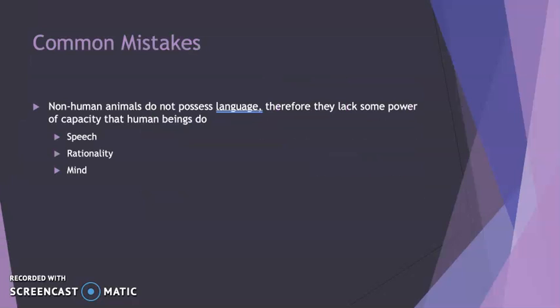Some common mistakes within philosophy, and also within the world at large and particularly within theological discussions, is to draw sharp lines between the human being and the non-human animal world — oftentimes to even ignore that human beings are animals, that we have bodies, that we are vulnerable, that we are subject to disease, that we are dependent upon each other. Many times this comes down to arguing about whether animals do or do not possess language. The argument usually goes: animals don't possess language, or dolphins don't possess language, and so they lack some kind of power or capacity that human beings do.